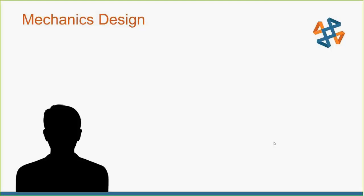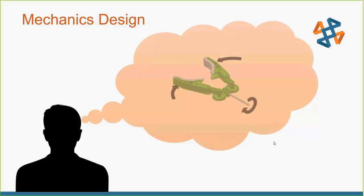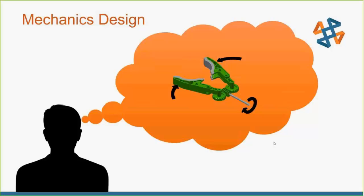I'm going to talk a little bit about mechanism design — where does it all start? Typically it starts in our heads. We've got maybe an existing design we need to modify, or maybe we just have a brand new idea. In the example here in my little thought bubble, we've got drive shafts, various gear trains, clamping jaws, maybe some pulleys, linkages. The list goes on and on.